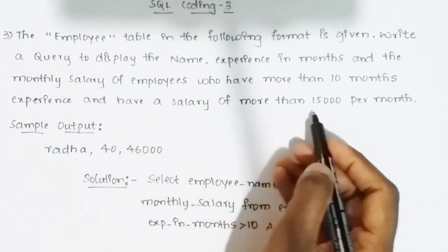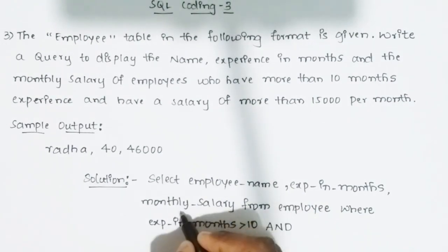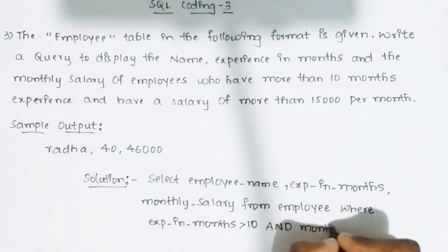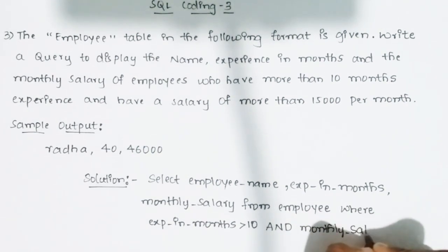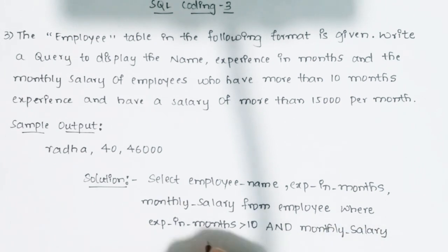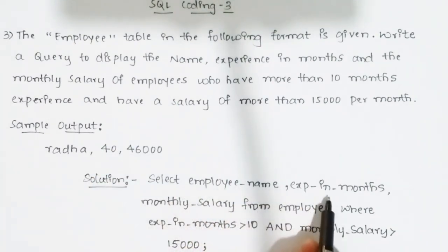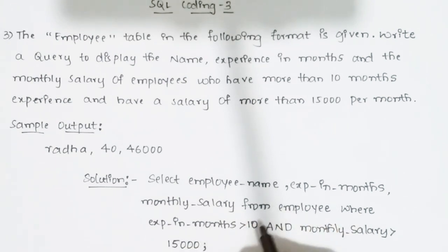Complete the second condition: AND monthly_salary > 15000, followed by a semicolon. So the full query is: SELECT employee_name, experience_in_months, monthly_salary FROM employee WHERE experience_in_months > 10 AND monthly_salary > 15000;